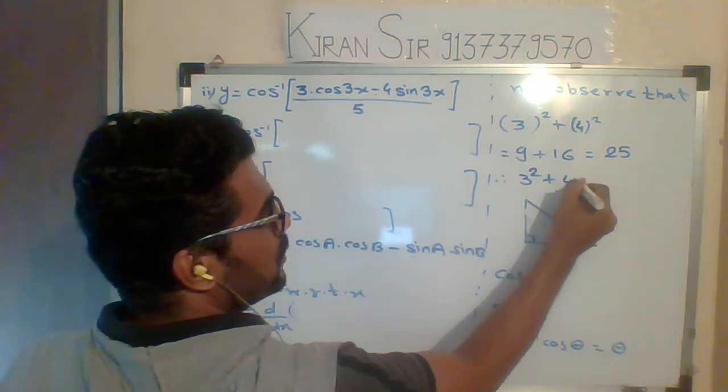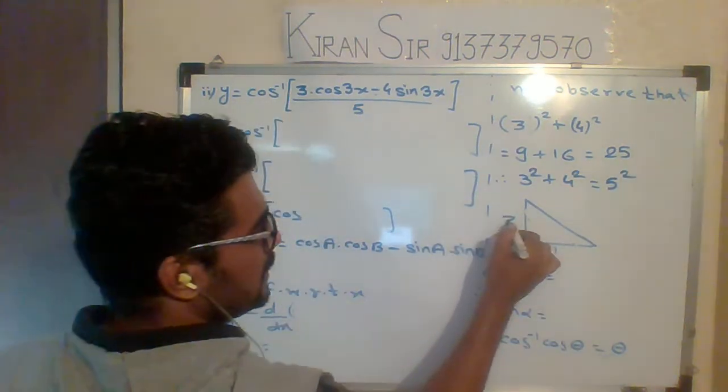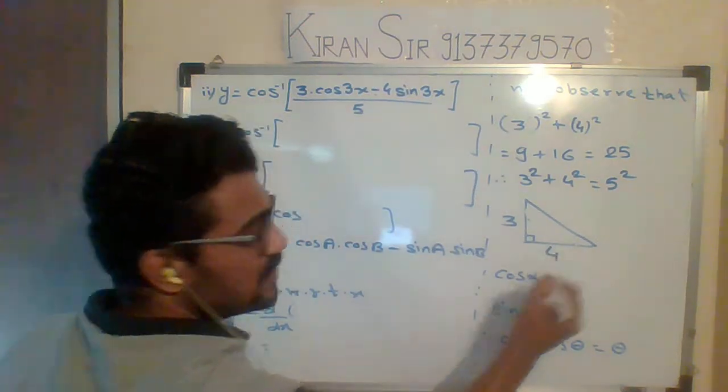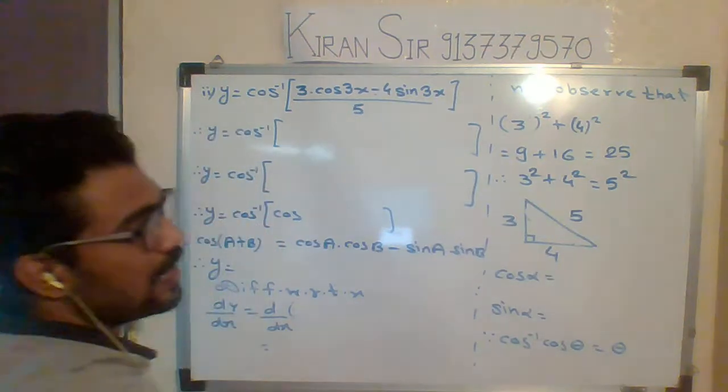We observe that 3 squared plus 4 squared is 5 squared. You observe that 3 is one side of the right angle triangle, 4 is the other side of the right angle triangle, and 5 is the hypotenuse.